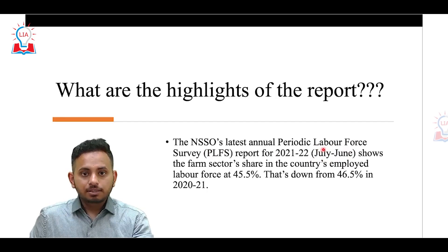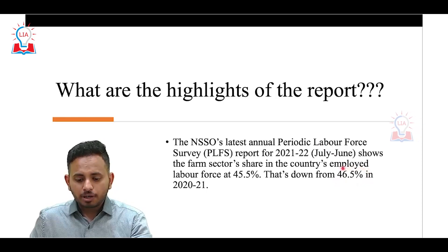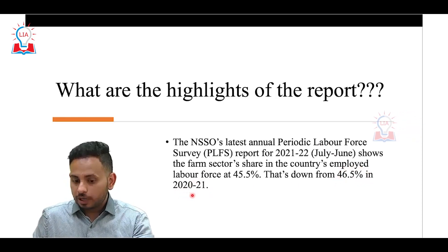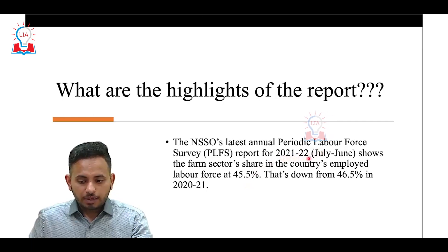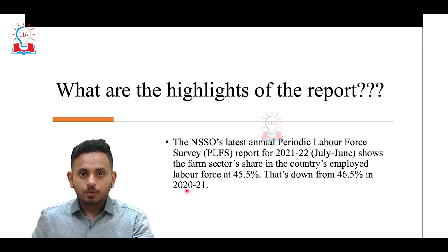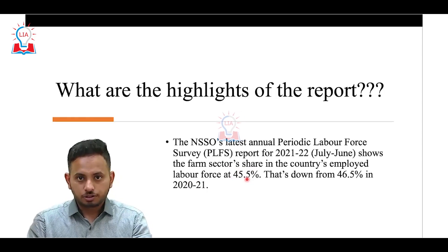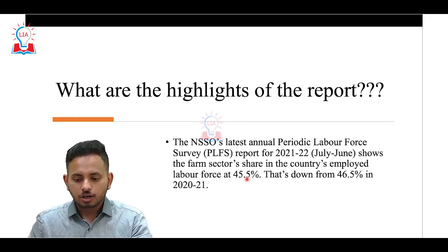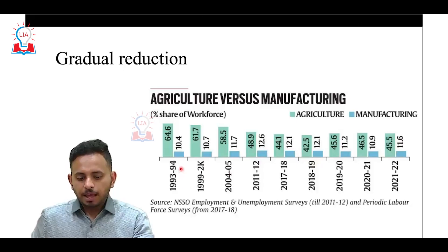The NSSO's PLFS report for July–June stated that the percentage of the Indian population depending on agriculture was 46.5% in 2020–21, and it has now reduced to 45.5% for July 2021 to June 2022 — a reduction of 1%. This means 45.5% of the Indian population is dependent on agriculture as of 2021.